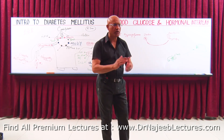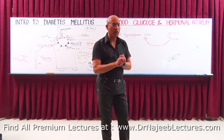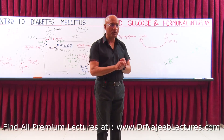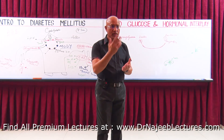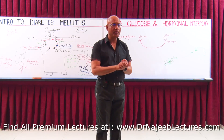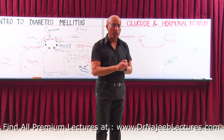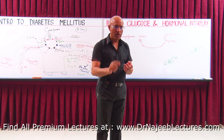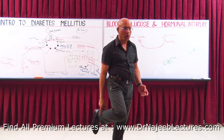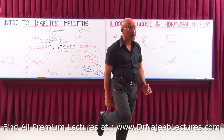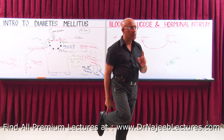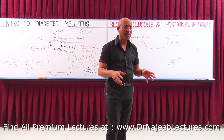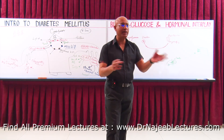Diabetes is one of the commonest causes of non-traumatic amputation of adult lower limbs. Of course, amputation can occur from accidents and trauma, but non-traumatic amputations of the lower limb most commonly occur in diabetic patients. Why? Because the diabetes monster attacks the foot in many different ways.